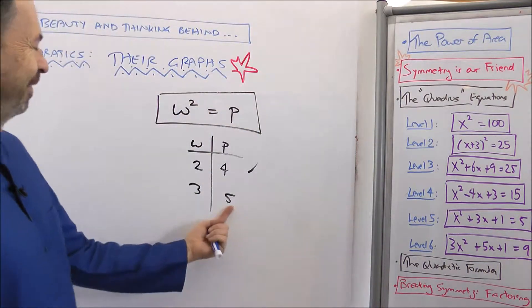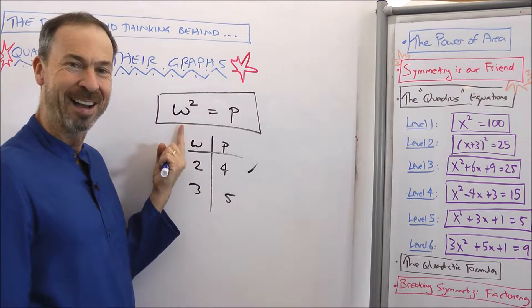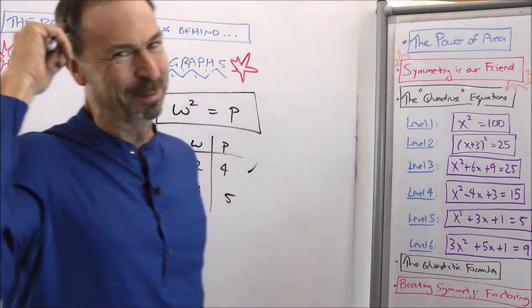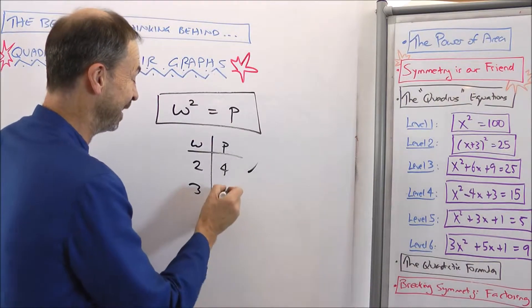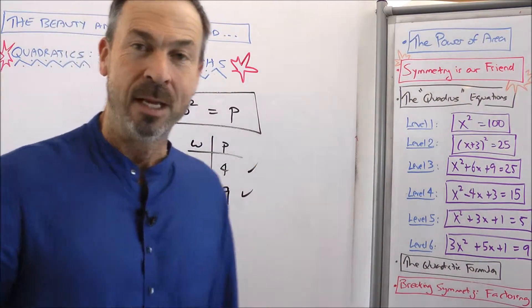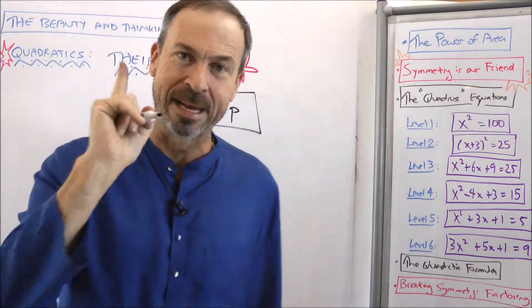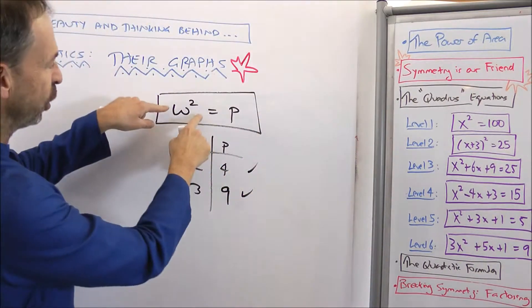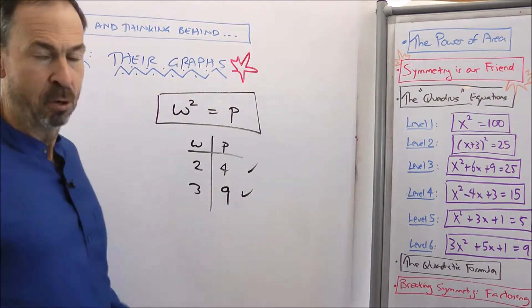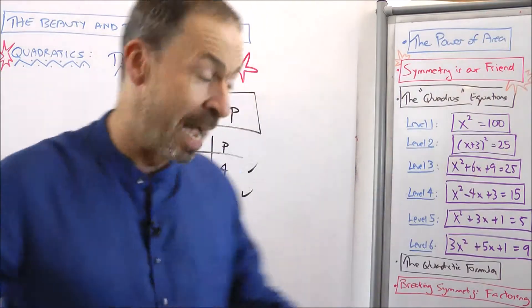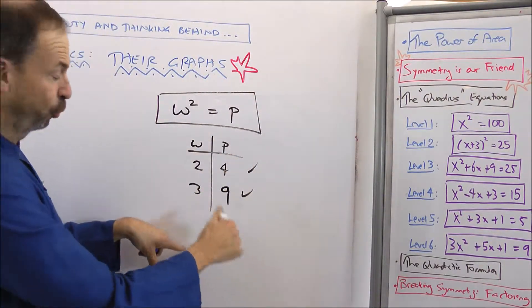If W was 3 and P was 5, I would not have a true sentence. 9 doesn't equal 5. Numbers in my head, you're right, if this was 9, we'd now have a true number sentence. So it seems very natural from algebra, given an equation with some unknown numbers that you're not sure of, is to collect all the data of all the numbers that make a true number sentence.